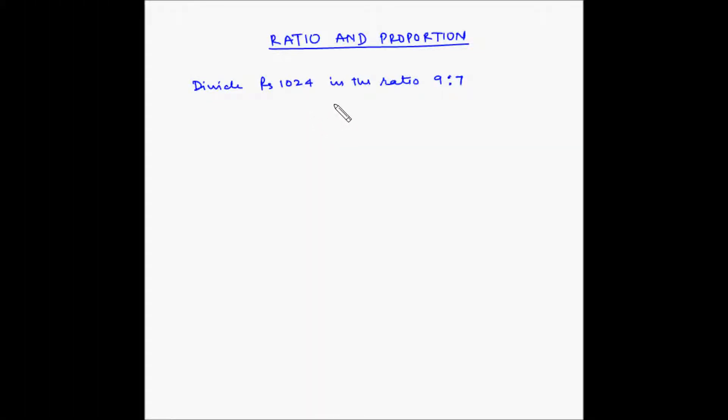Let us look at an example of ratio and proportion. Let us first start with a very basic example. Divide rupees 1024 in the ratio 9 is to 7.